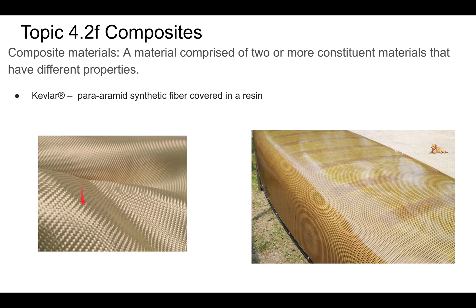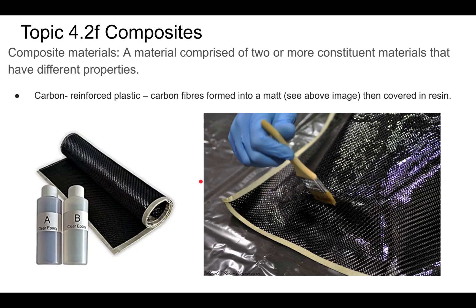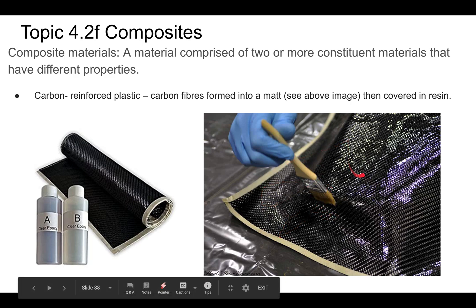Kevlar is a registered trademark synthetic fiber. You cover it with resin and it produces a very strong, very light material — strong enough to make bulletproof vests. This canoe made out of Kevlar would be very strong and take a lot of damage before breaking. Carbon fiber is also a very strong material — you take the fiber, which is flexible without resin, add resin and it hardens into something very strong. Bike frames, airplane fuselages, and wings are made out of carbon fiber.